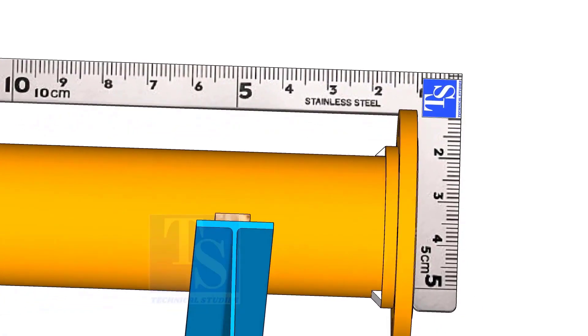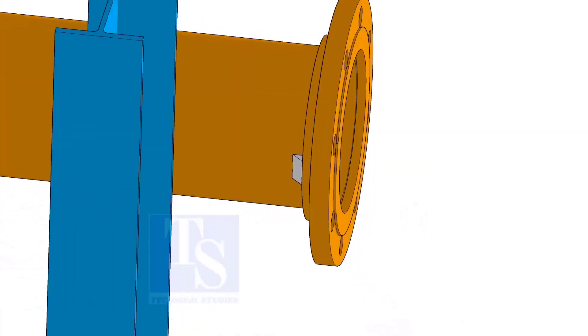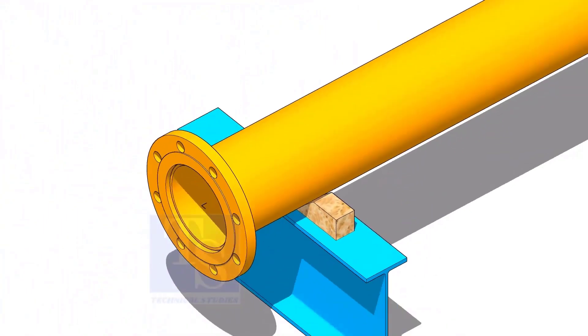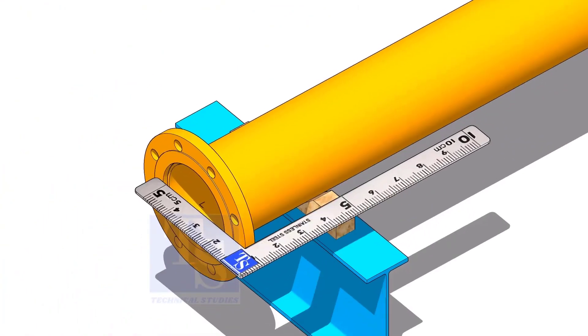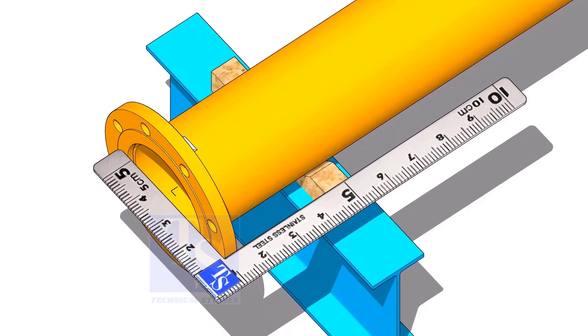Tack weld at the bottom side. Square the flange face horizontally to the side of the pipe.